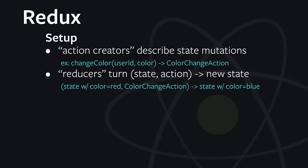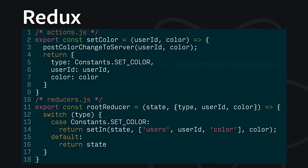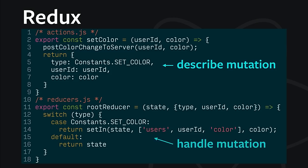In order for our pure component to get access to the state and the updater, there is a wrapper function that happens at the point where we need the data. We just make a wrapper around our pure component that specifies a way to get the data we need from the global state, and it also passes in a callback function to update that state. Here's what the action creator and reducer might look like — just a description of a mutation and a way to handle it. This second function looks a lot like the update method we had in our plain React component.